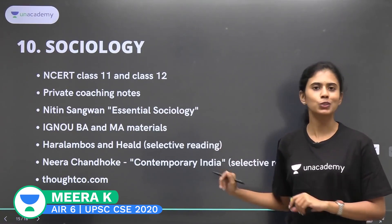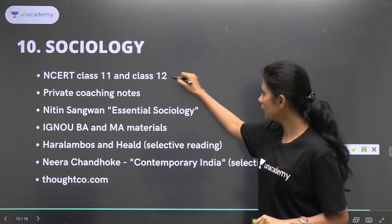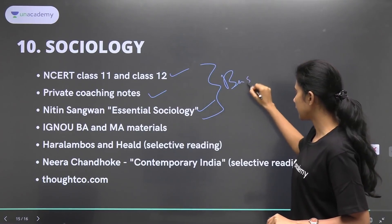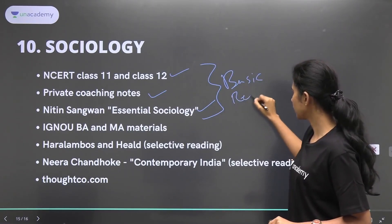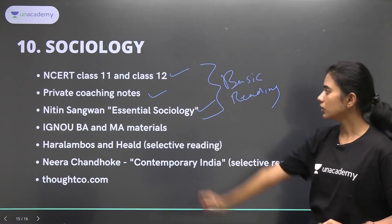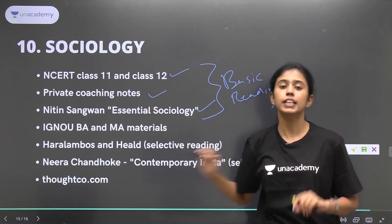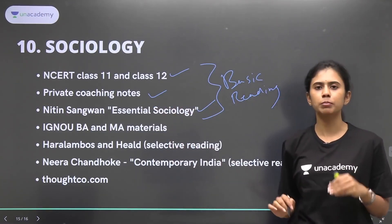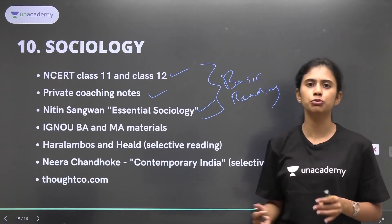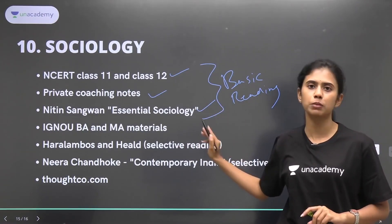Coming to the Sociology part, which is my optional — this and this form the basic reading material that I used, and these were all selective reading. The primary resource for Sociology is Class 11 and Class 12 NCERTs, especially if you are new to the discipline. Like me, I was an engineer and Sociology was something completely new for me, so I started with the Class 11 and Class 12 NCERTs, which I found very important.